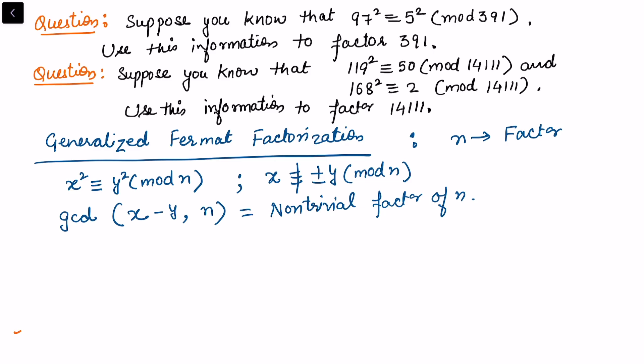Now we will use this information to find the answer for the first question. For the first question, we have been given that 97² is congruent to 5² mod 391. So we just need to check the second condition. We see that 97 is not congruent to plus or minus 5 mod 391.